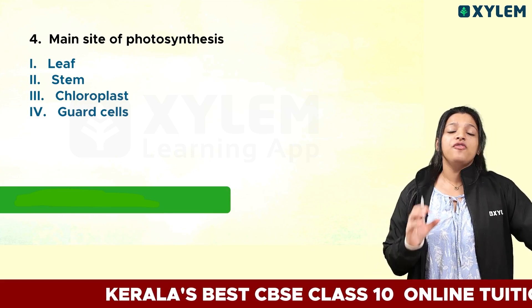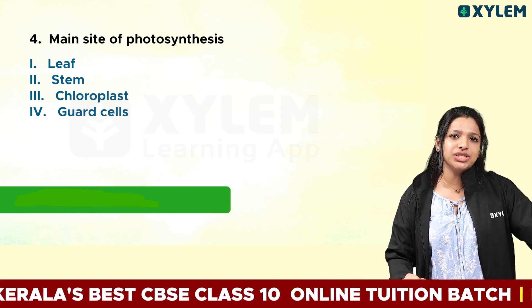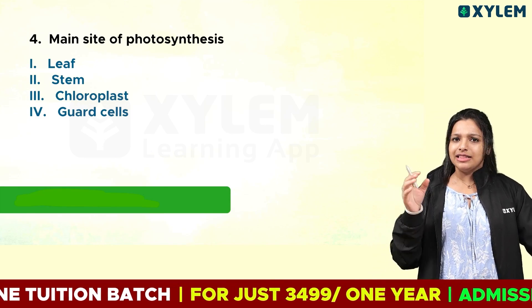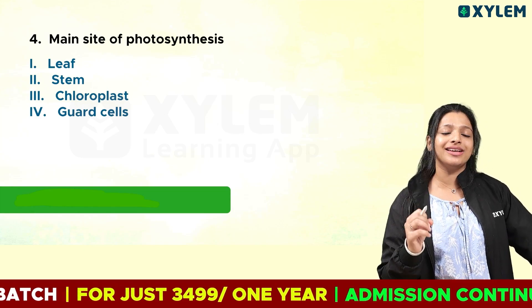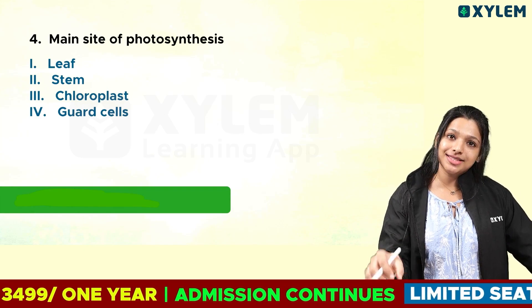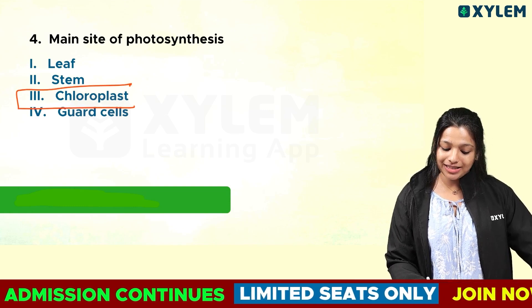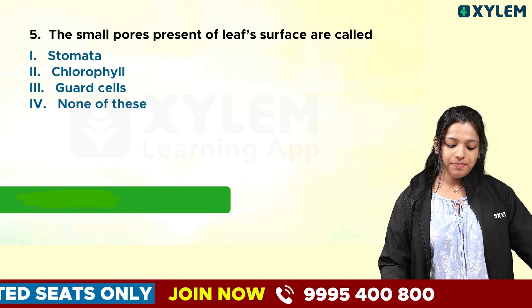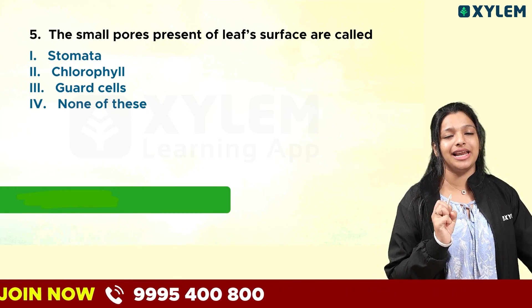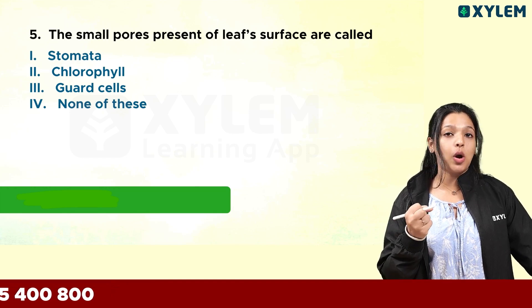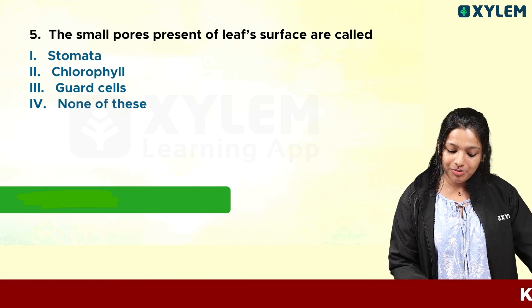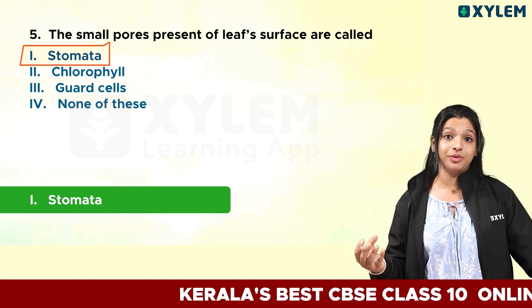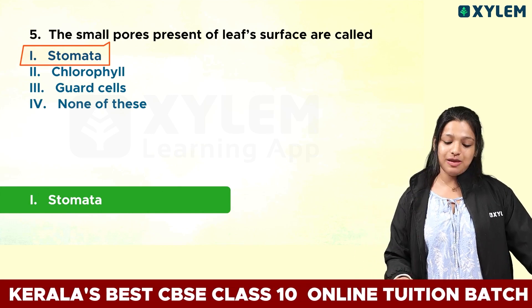Next question: what is the main site of photosynthesis? The options are leaf, stem, or chloroplast. We have small openings in the leaf surface — we call it stomata. Stomata are involved in transpiration, respiration, and gas exchange. This is very important.